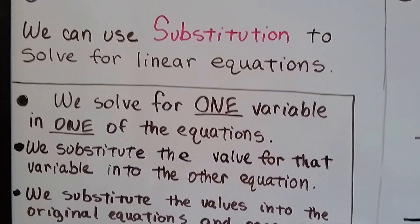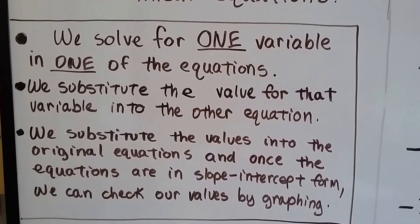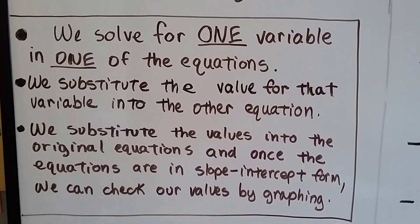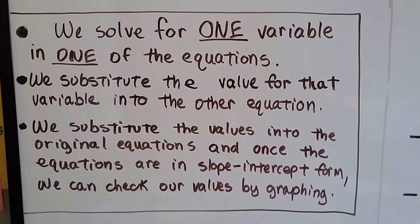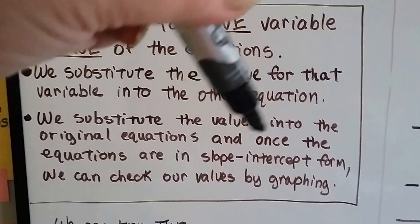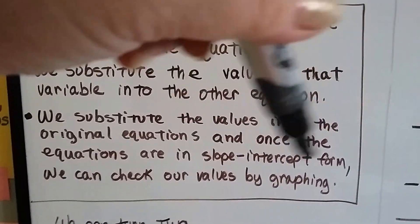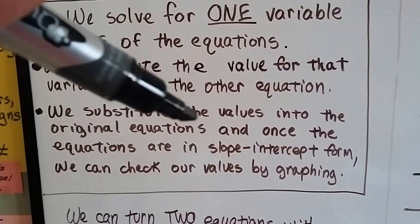So we're going to use substitution to solve for our linear equations. We solve for one variable in one of the equations, we substitute the value for that variable into the other equation. And we substitute the values into the original equations. Once the equations are in slope-intercept form, and we talked about how to do that a couple videos ago, we can check our values by graphing them.